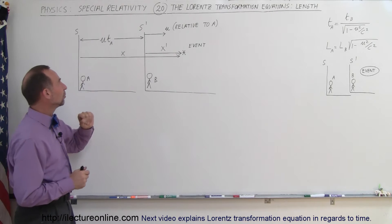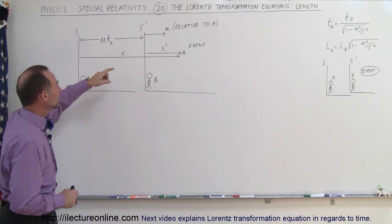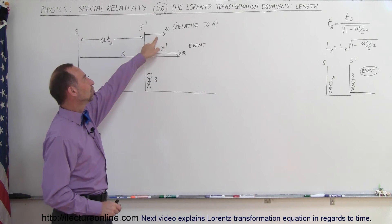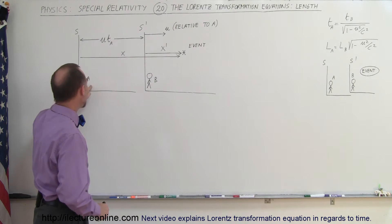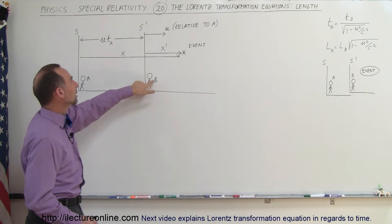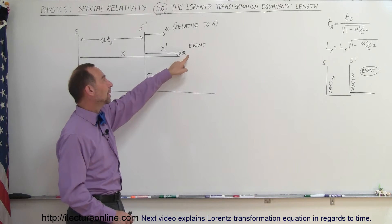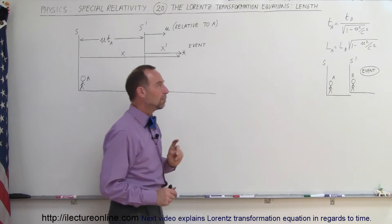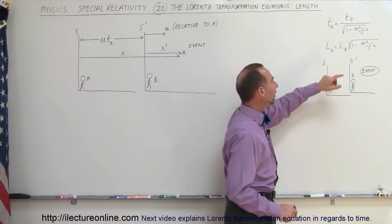Here we have two reference frames. One is S, the stationary reference frame. The other is S', the moving reference frame. S' is moving at velocity U relative to observer A, who is in the stationary reference frame. Observer B is in the moving reference frame, and the event is happening in the moving reference frame S'.